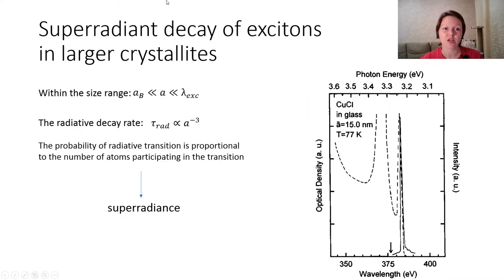Within a certain size range, the oscillator strength of the exciton transition is proportional to the number of atoms, that is, the volume of the crystallite. The radiative decay, which is proportional to the oscillator strength, should obey this ratio. When the probability of radiative transition is proportional to the number of atoms participating in the transition, this process is called superradiance by analogy with a similar phenomenon occurring in atomic and molecular ensembles.